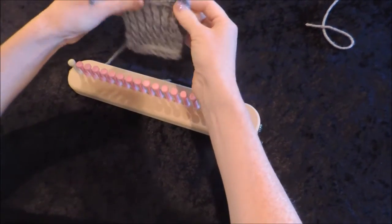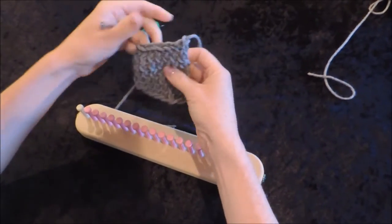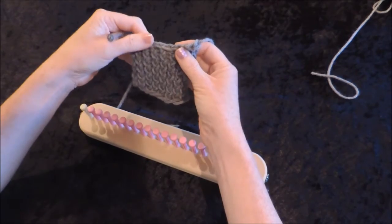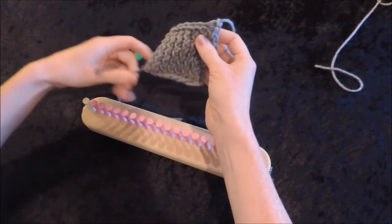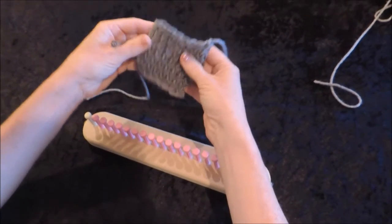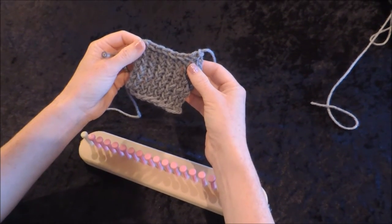You don't want to pull it super tight, because you want it to be about the same looseness as your bottom. So you just kind of pull that through, but that will secure it. And then that's how you bind off for a basic flat panel.